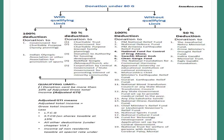The adjusted gross total income means gross total income less long-term capital gain, minus short-term capital gain on shares taxable at 15 percent, minus all other deductions, and minus income of a non-resident taxable at a special rate. These are the various deductions available in respect of payments to an assessee. Thank you.